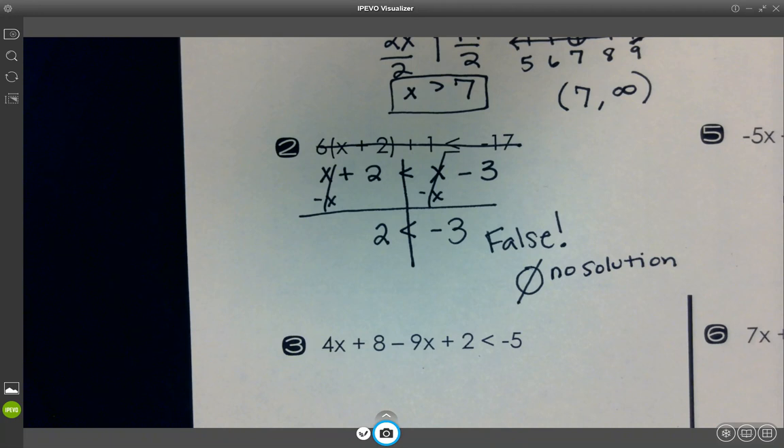I'm going to do number 3. Combine your like terms. 4x minus 9x. So, 4 minus 9, negative 5. And then your constants, a positive 8 and a positive 2, plus 10, is less than negative 5.